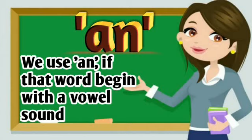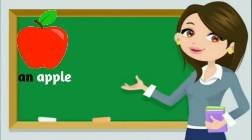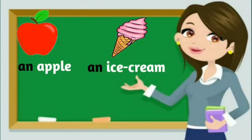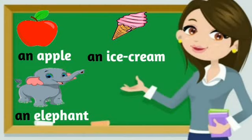We use AN if that word begins with a vowel sound. For example: an apple, an ice cream, an elephant.